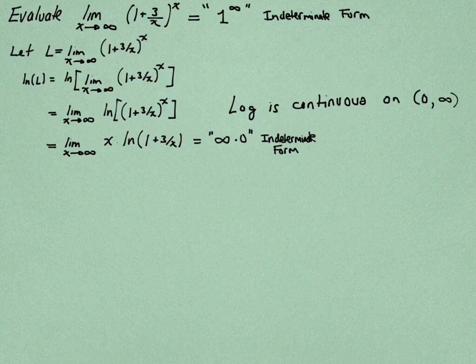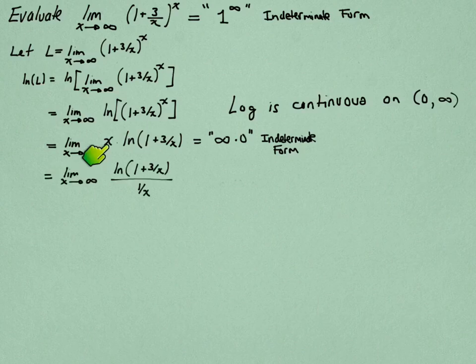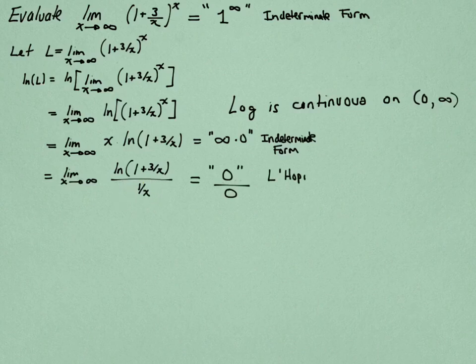L'Hôpital's rule can be applied only if we get this into a fractional form, if I see 0 over 0 or infinity over infinity. And one way to make that happen here is to take that x and instead of multiplying it, I'm going to divide by its reciprocal. These are equivalent expressions. And now what happens is this is going to 0 up top. And as x becomes large, the denominator now is going to 0 as well. And I see a form of 0 over 0. L'Hôpital's rule can be applied to that form.